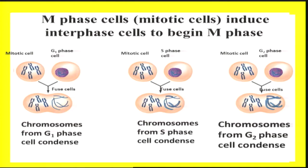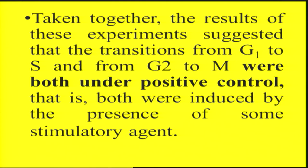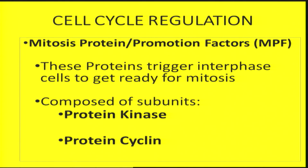Similarly, when various stages of cells were fused, the characteristic feature of that particular stage was induced even in interphase cells. It was believed that certain proteins in the cytoplasm induce the interphase cell to behave as if it is in M phase. The results suggested that transitions from G1 to S or from G2 to M were under positive control, induced by stimulatory agents. These proteins were found to be MPFs.